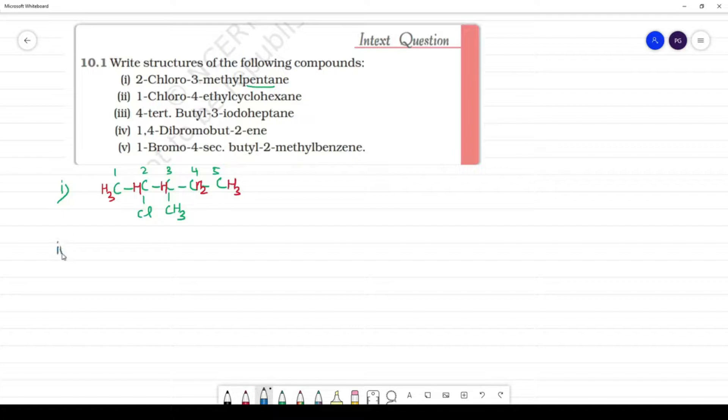Next, second one is 1-chloro-4-ethyl-cyclohexane. What is cyclohexane? It is a ring compound. Benzene ring. This is cyclohexane.